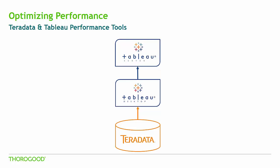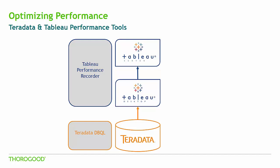There are multiple tools available to monitor and optimize the performance of each of these. First, Teradata Database Query Logging, or DBQL, is used to analyze queries fired from Tableau to Teradata. For Tableau, there are two main tools available. First, the Tableau Performance Recorder captures the timings of queries fired from Tableau Desktop and Server. Second, there is Tableau Postgres, which is used to track the usage and load balance on Tableau Server. Since we are more interested in tuning our dashboards and underlying data sources, we are only going to focus on Teradata DBQL and Tableau Performance Recorder in this video.